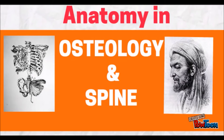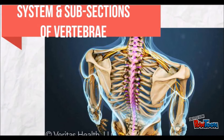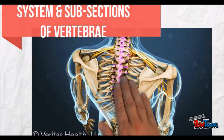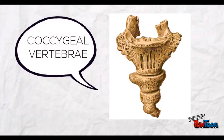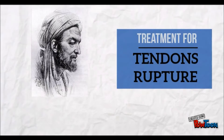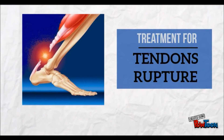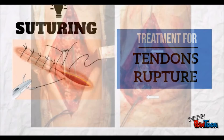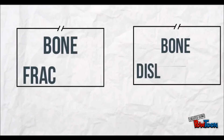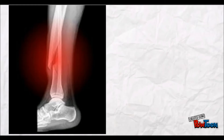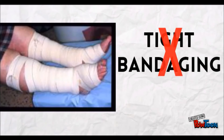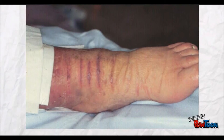In anatomy of osteology and the spine, he emphasized an association between the size and shape of vertebrae and their function. He explained the overall system of the spine and identified each subsection, like thoracic vertebrae, lumbar vertebrae, coccygeal vertebrae, and sacrum. He also provided an efficient treatment for tendon rupture, which is suturing — used to hold both tissues together after surgery. In the Canon of Medicine, Ibn Sina states the parts and types of bone dislocations and bone fractures. When bone fractures are severe, instead of using tight bandaging, Ibn Sina advised against it because tight bandaging can obstruct blood supply to the extremity, which can cause compartment syndrome.